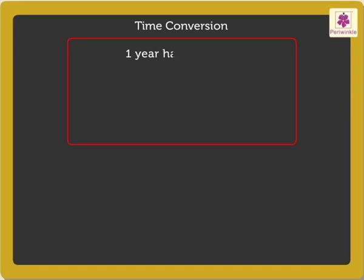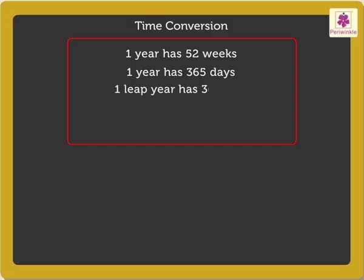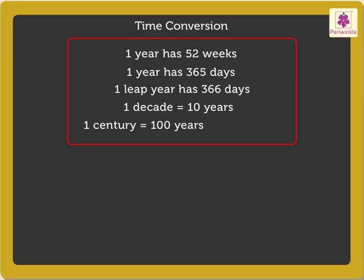One year has 52 weeks. One year has 365 days. And one leap year has 366 days. One decade is equal to 10 years. One century is equal to 100 years, which is the same as the period of 10 decades.